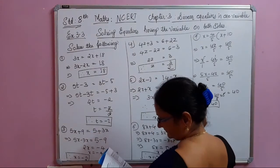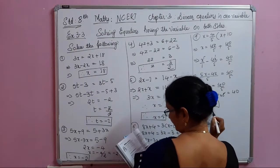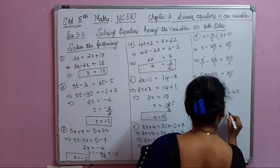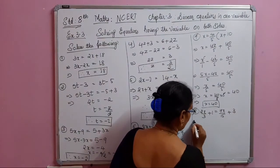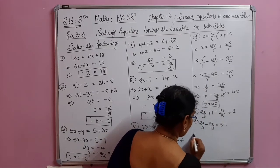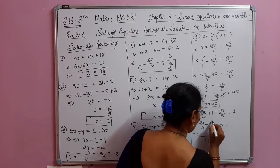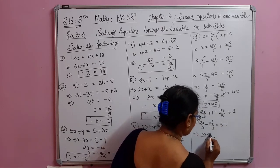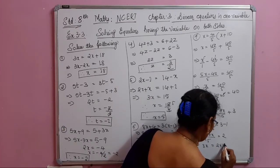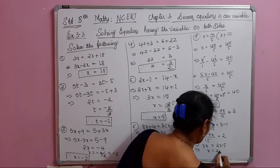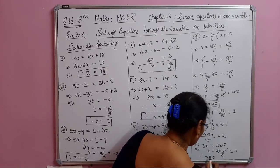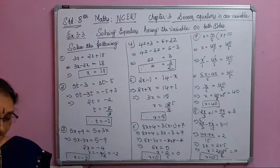The eighth problem is 2x divided by 3 plus 1 equals 7x by 15 plus 3. Transposing: 2x by 3 minus 7x by 15 equals 3 minus 1. LCM is 15: 10x minus 7x equals 2, so 3x equals 30, therefore x equals 10.